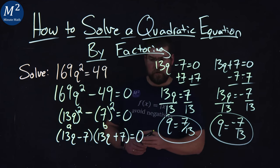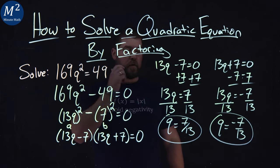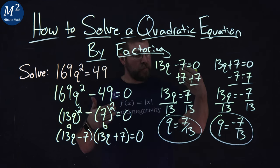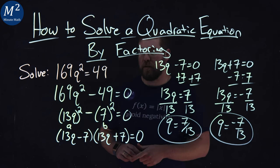So we have two solutions for our quadratic, which is fairly common. And for our equation here, 169q² = 49, our two solutions we came out to by factoring are q = 7/13 and -7/13.